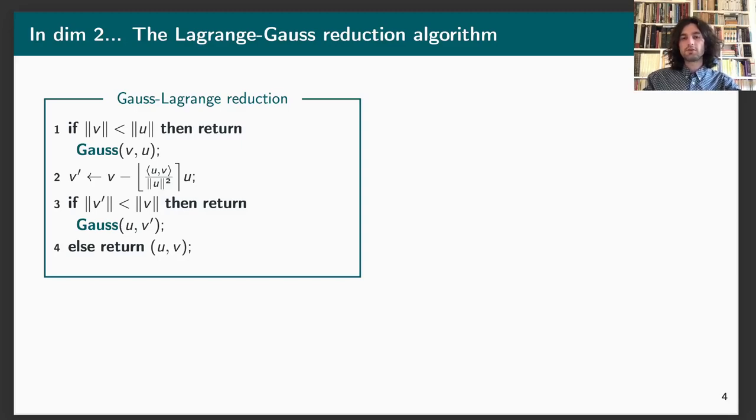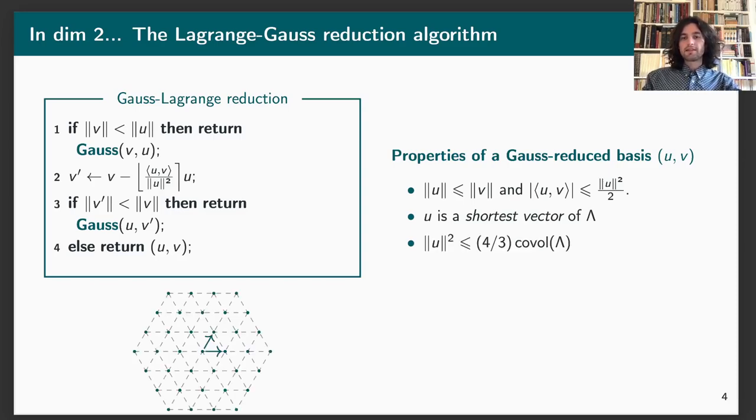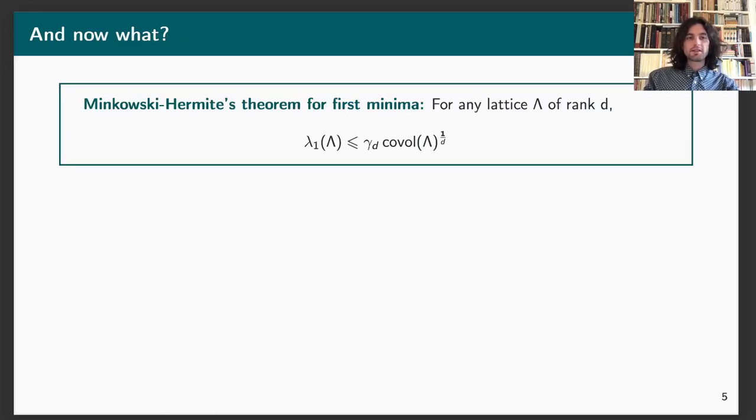This algorithm has very interesting properties. In particular, the output basis satisfies that the first vector is one of the shortest vectors of the lattice. Moreover, you can prove from that that the length of this shortest vector is smaller than four-thirds of the co-volume of the lattice, which is a constant which is independent of the lattice itself. More generally speaking, in any dimension, in any rank, we get the Minkowski-Hermite theorem for first minima, which asserts that for a lattice of rank D, the length of the shortest vector will be smaller than some constant, which only depends on the dimension, multiplied by the normalization of the co-volume.